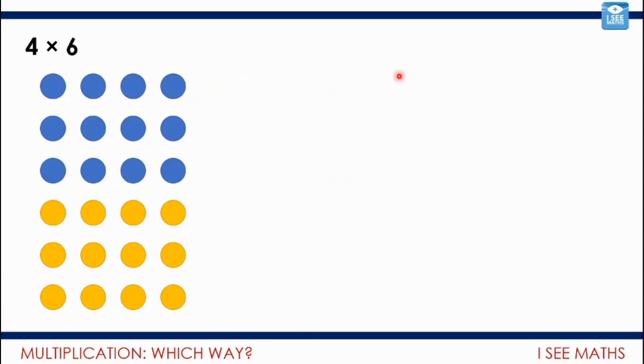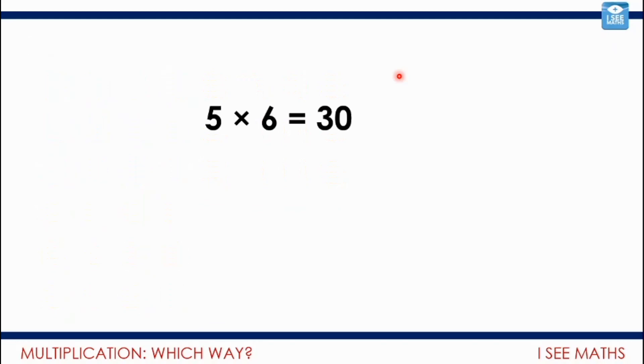So again, if I halve one number, double the other one, I end up with the same answer. Now, that can be helpful. Here's just another quick example. So let's say 5 multiplied by 6 equals 30. And I can think, well, actually, I know that if I double one number, like I double the 5, make it 10, and halve the other one, halve the 6 to make it 3, the answer will still be 30.